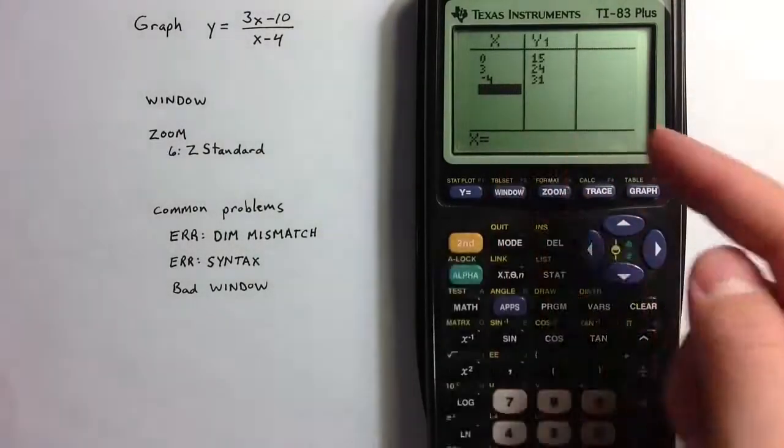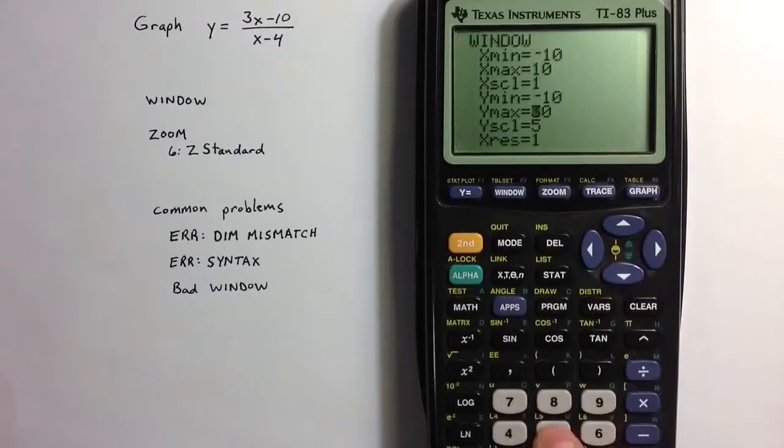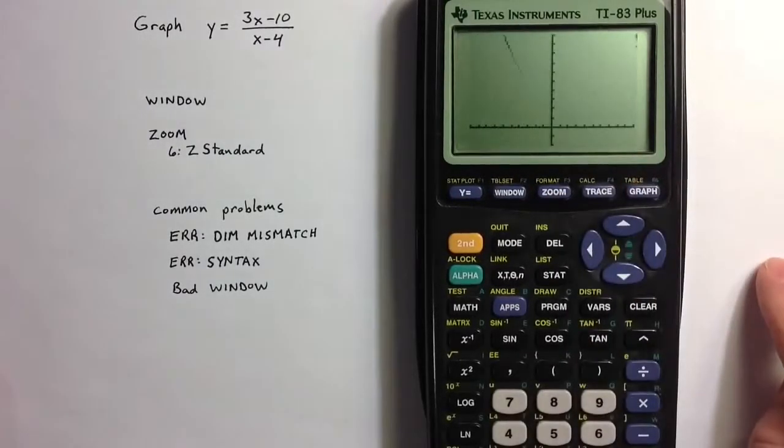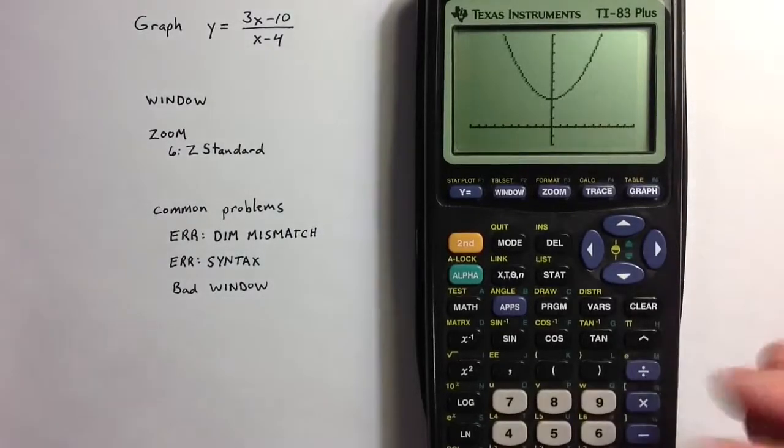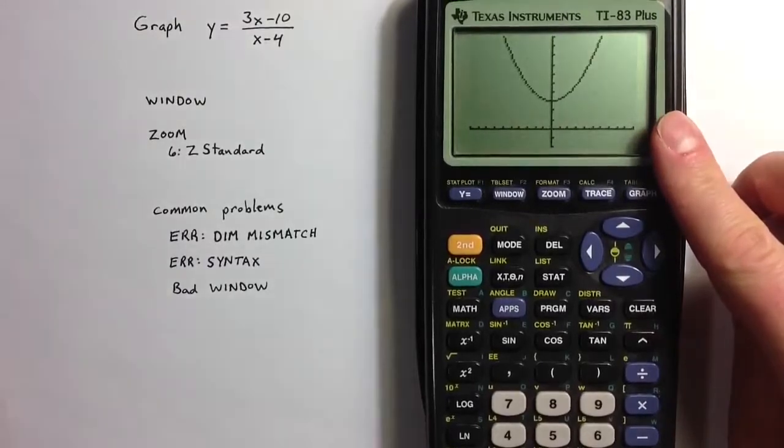And so setting the window up to 30, well, maybe we should actually, to get a slightly better graph, we could set it up to 50. So adjusting the window in a way can make a graph appear that might not otherwise be visible.